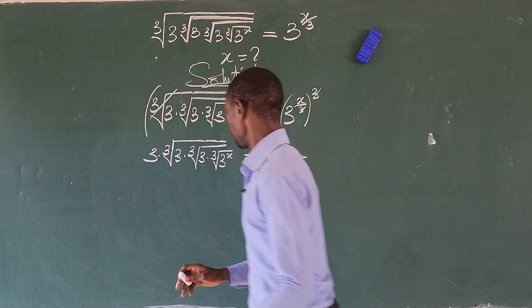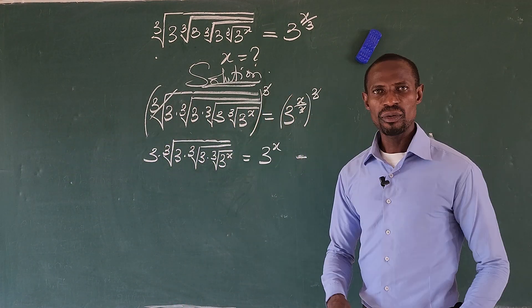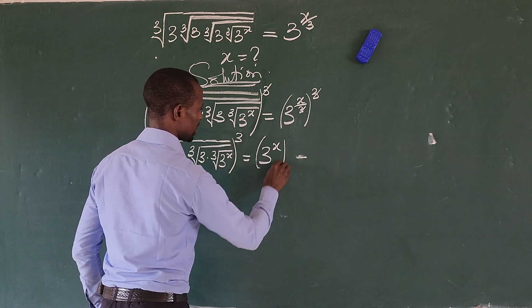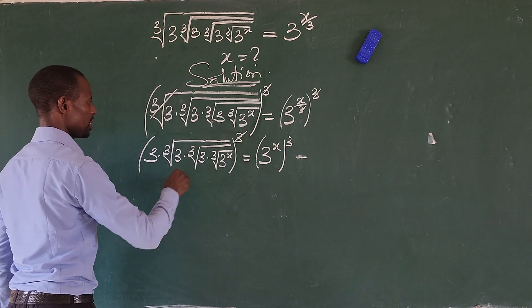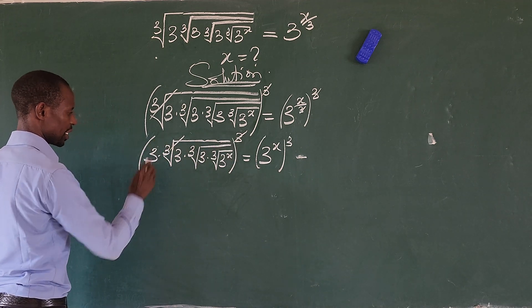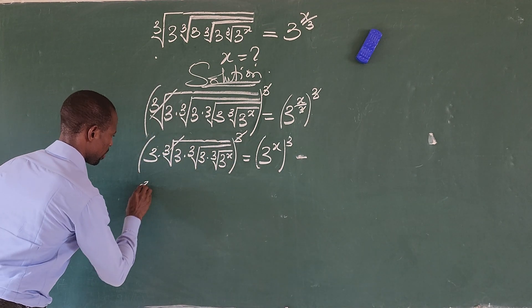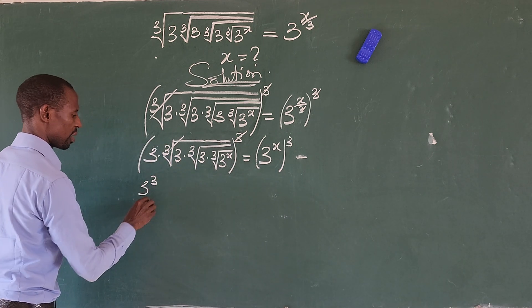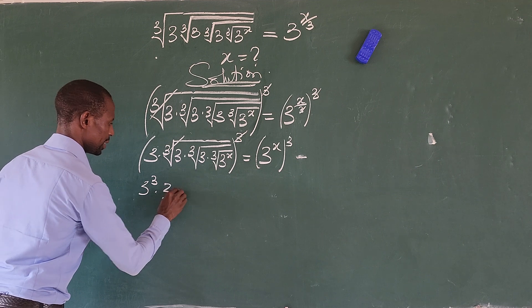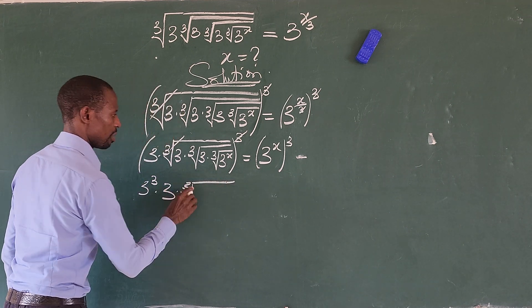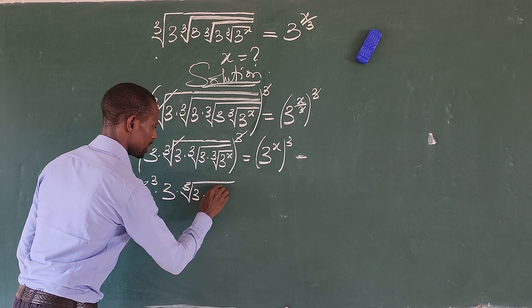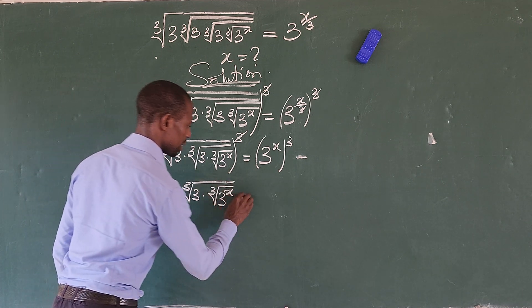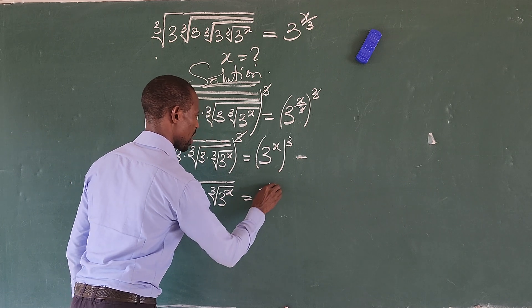Next, we take the cube of both sides again. Cubing both sides, we get 3 to the power of 3 times our 3 times the cube root of 3 times the cube root of 3 times the cube root of 3 to the power of x, equal to 3 to the power of x, all raised to the power of 3.